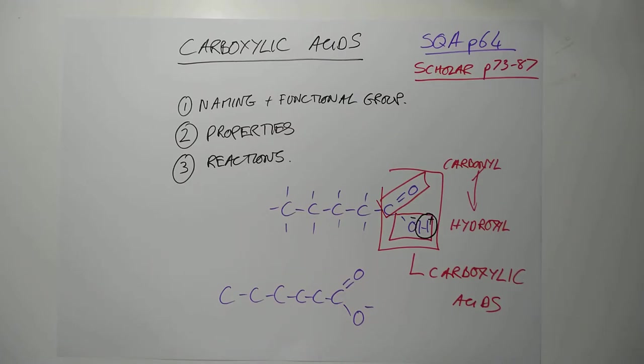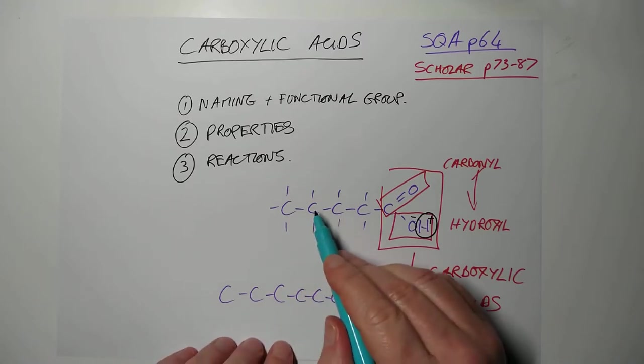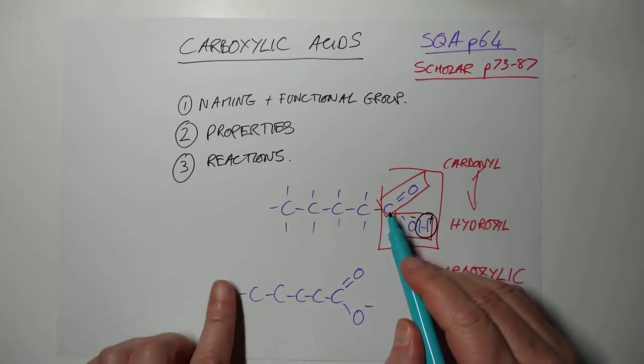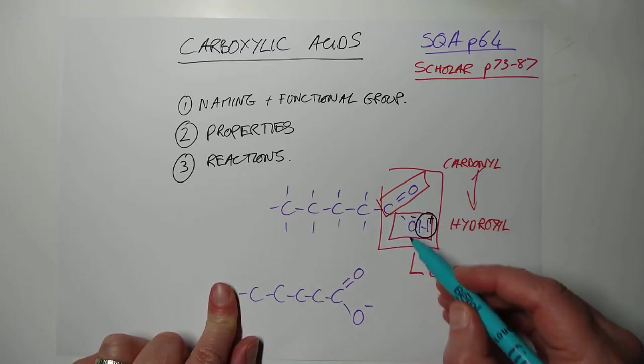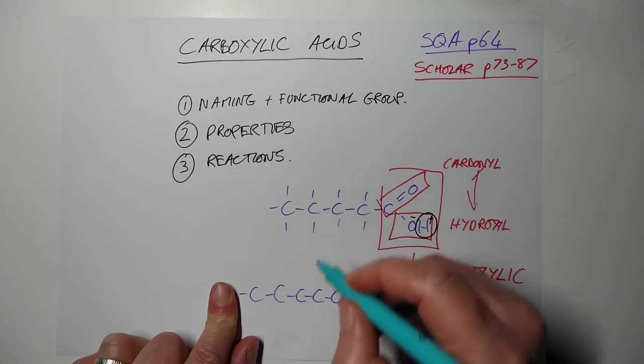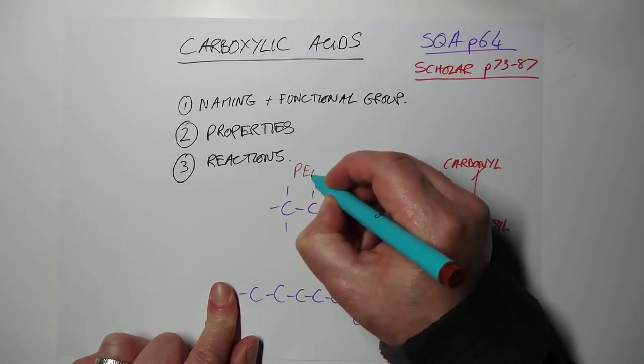If we have a look at some names. The name of this one here is one, two, three, four, five. Pent for five. And because they're all single bonds, oic acid, because this is a carboxylic acid. So this is pentanoic acid.